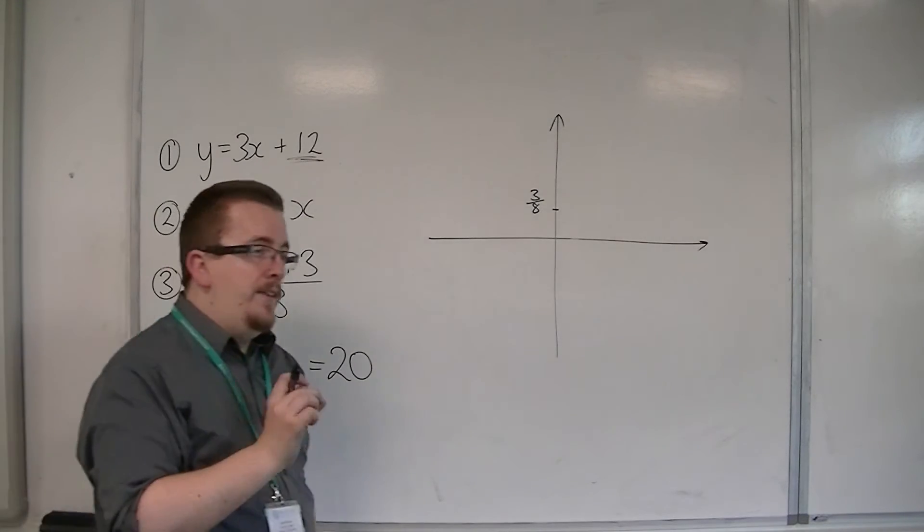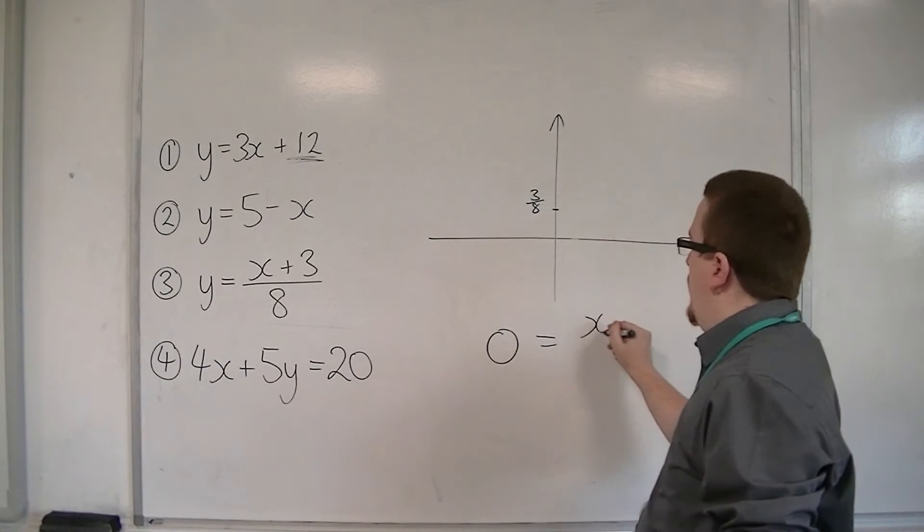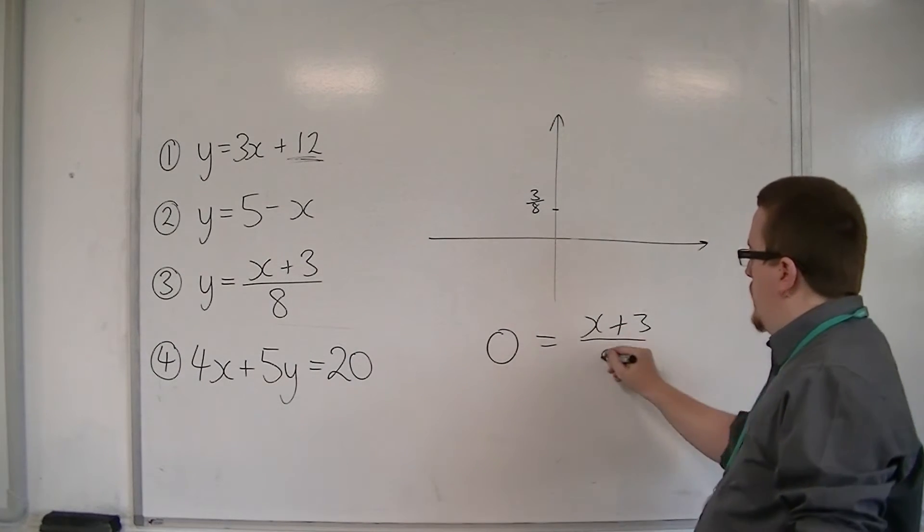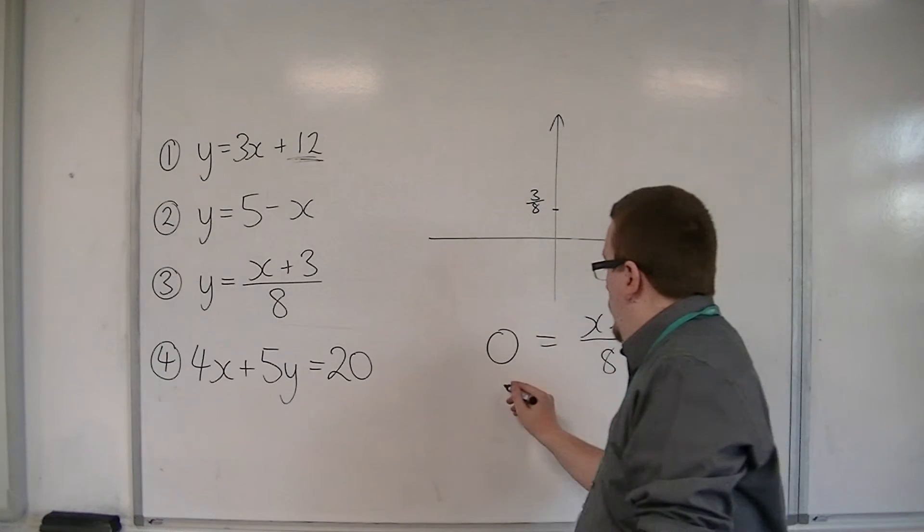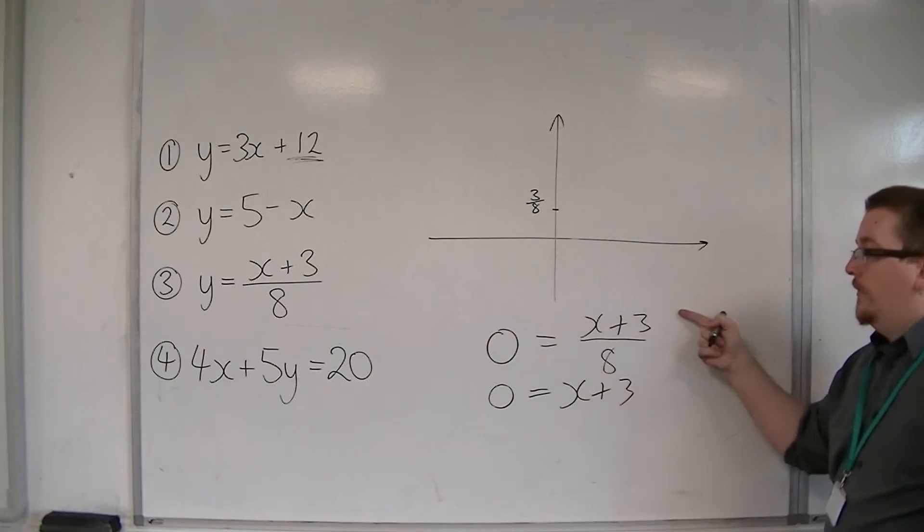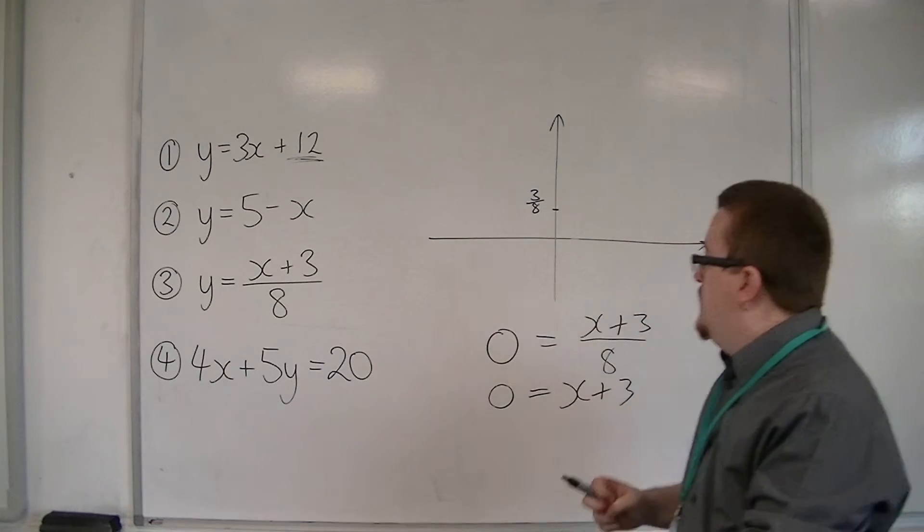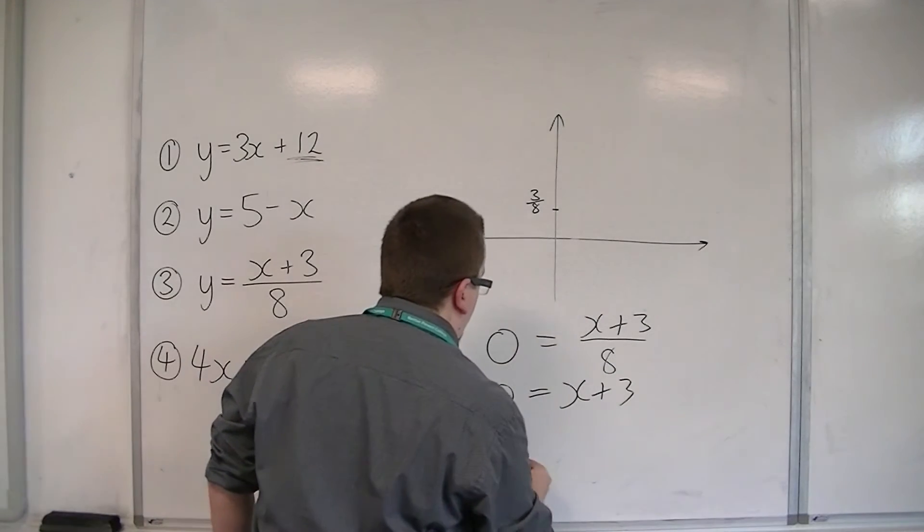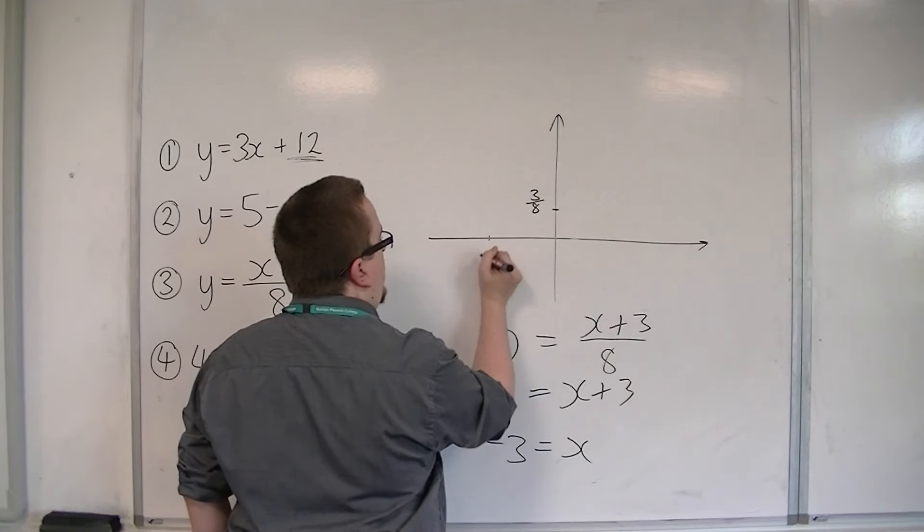Now when y is 0, if we put 0 is equal to x plus 3 over 8, then we can multiply both sides by 8. So we get 0 is equal to x plus 3. In other words, the x plus 3, the numerator must be 0. And then we can take 3 from both sides. So x is minus 3.